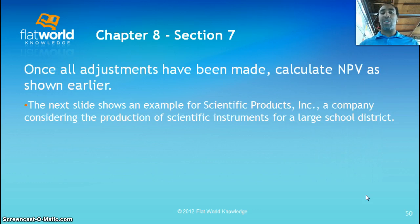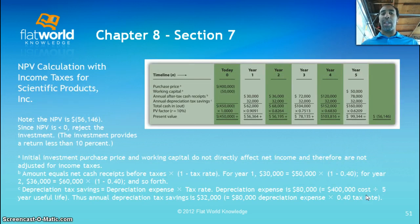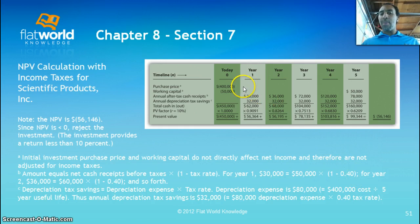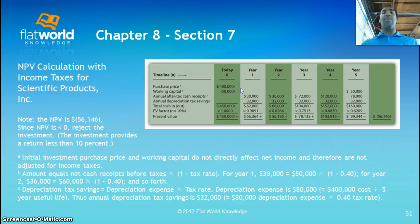The next example is Scientific Products Inc., a company considering scientific instruments for a large school district. Looking at the net present value calculation with income taxes for Scientific Products: the purchase price is $400,000 and working capital is negative $50,000, giving us a total initial outflow of negative $450,000. These are long-term investments, so of course it is all negative upfront at the beginning.